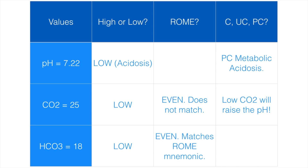I don't have a slide on compensated issues, because if the pH is normal — if all the values were the same but the pH was 7.40 — then it would be a compensated metabolic acidosis. That one's a really easy one: compensated means normal pH. In this case the pH was low, so it's a partially compensated metabolic acidosis. That's it guys, thanks for watching.